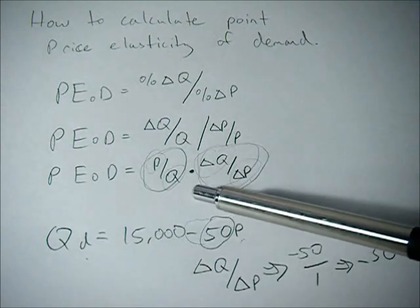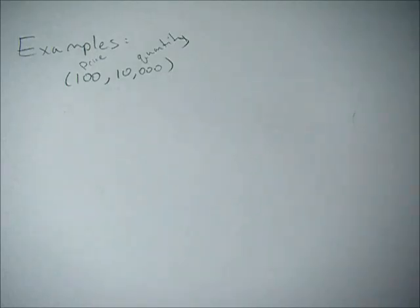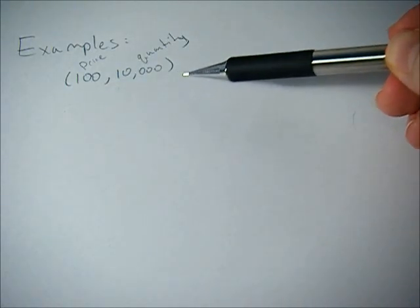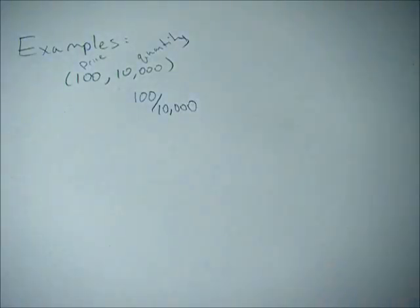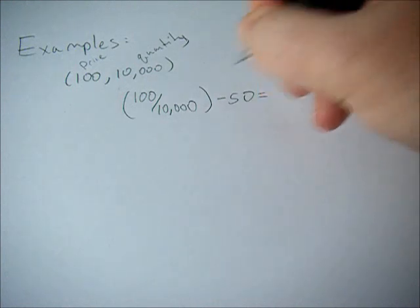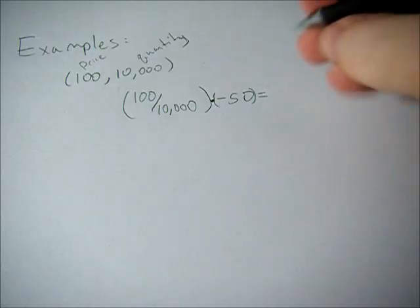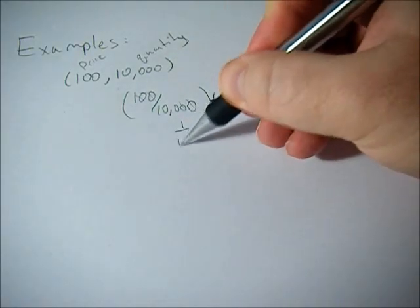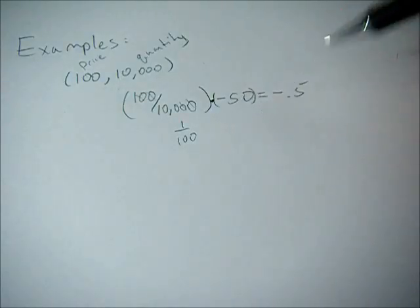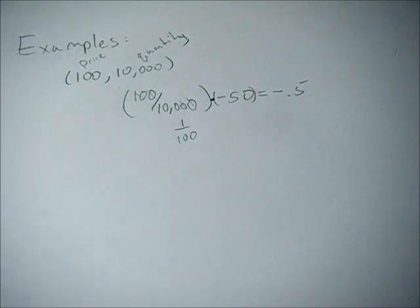Now we know our change in Q over change in P value is negative 50, so we just need our P over Q value. For the first example, with a price of 100 and a quantity of 10,000: 100 over 10,000 times negative 50 equals negative 0.5, since 100/10,000 is 1/100, and negative 50 times 1/100 is negative one-half. So the point price elasticity of demand here is negative 0.5, which is inelastic.